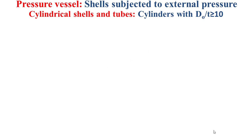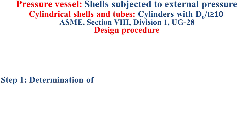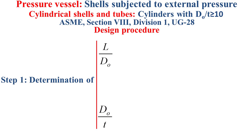For cylindrical shells and tubes with a ratio outer diameter divided by thickness higher than 10, and based on ASME Section 8 Division 1 UG-28, we have a design procedure in five steps. Step one is about the determination of the ratio L by DO and DO by T. DO is the outer diameter of the shell or tube, and T represents a pre-selected thickness that can be equal, for example, to the required thickness of the shell subjected to internal pressure.